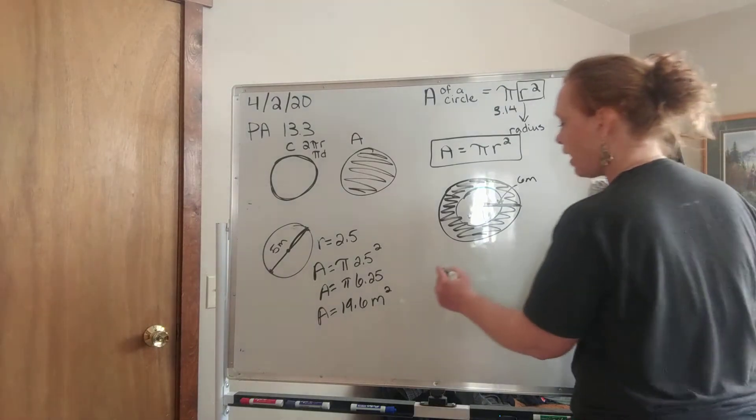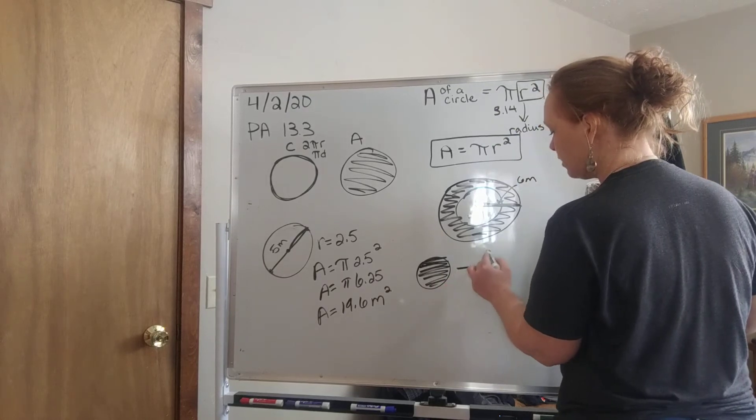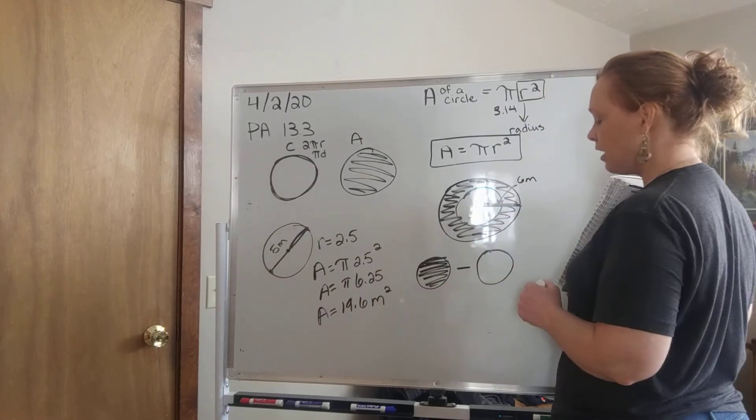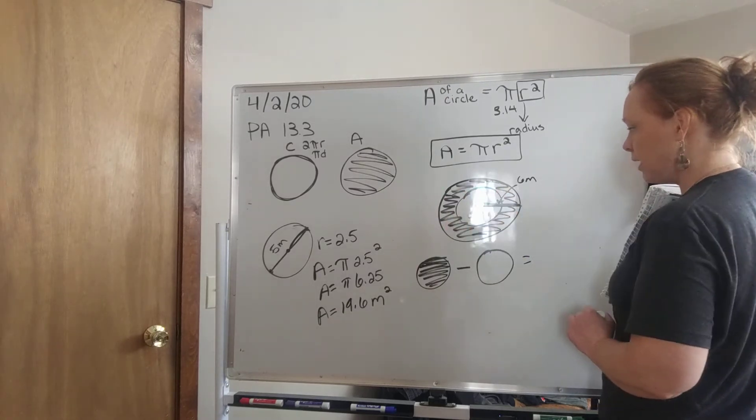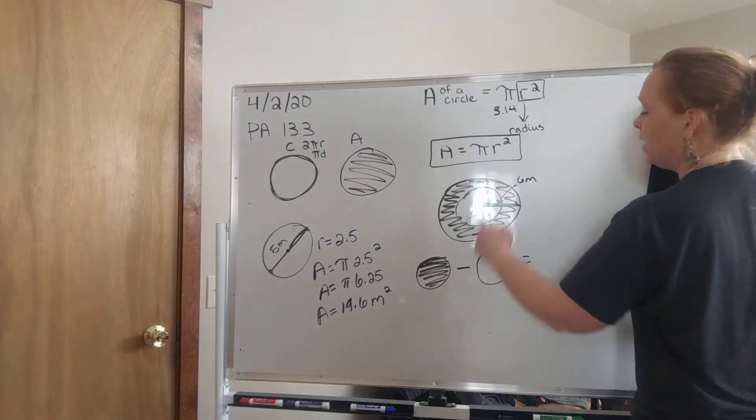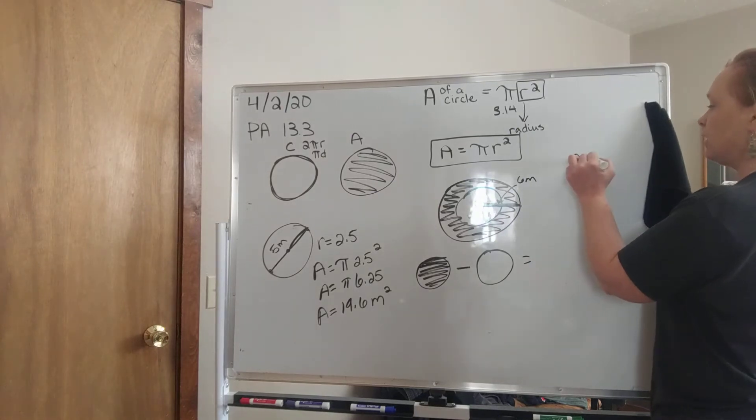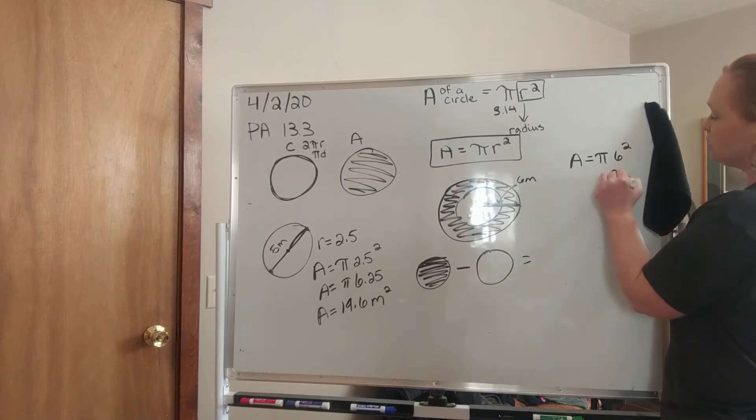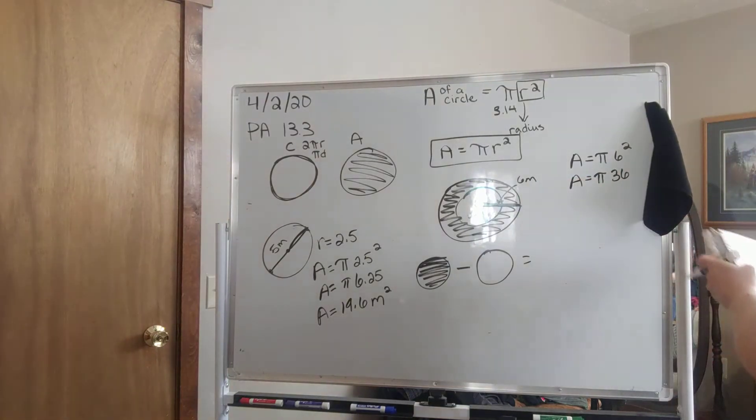So what they're asking us for is the area of the colored region. Well, what do I need to do? I need to find the area of the colored circle, and then I need to subtract the area of the non-colored circle, and that will give me the area of what's left over. So let's do that. First, let's find the area of the shaded circle. So the radius is 6, so we're going to say the area equals pi 6 squared. 6 times 6 is 36. Go ahead and do pi times 36 in your calculator.